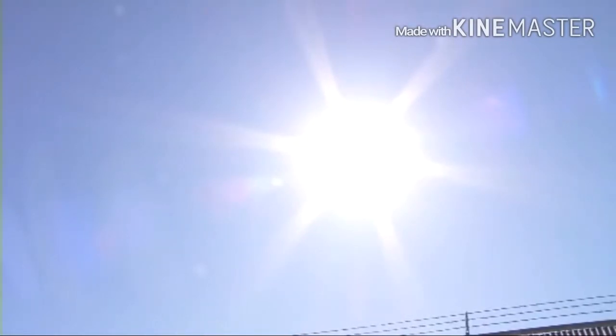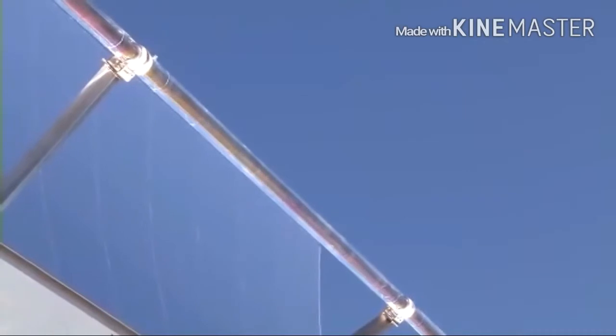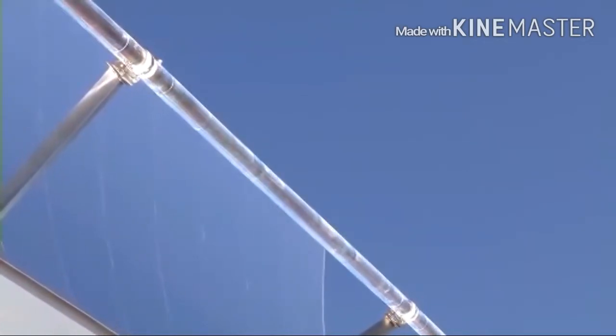When the sun's heat is reflected off the mirror, the curved shape sends most of that reflected heat onto a receiver. The receiver tube is filled with a fluid, and could be oil, molten salt, something that holds the heat well.